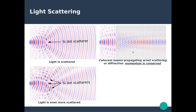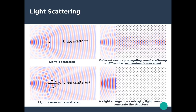Those beams propagating within the periodic arrangement occur without scattering or diffraction — the light momentum is conserved. Light was coming in with a particular k-vector normal to the surface and still propagating with the exact same k-vector within and out of the periodic arrangement. Then, shifting the wavelength slightly resulted in total reflection, preventing light from penetrating this periodic structure.